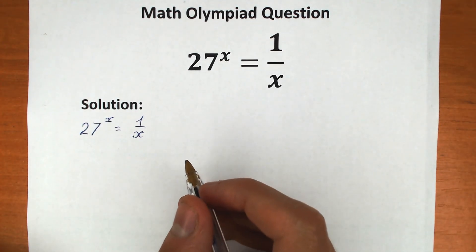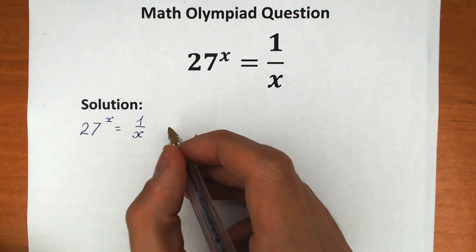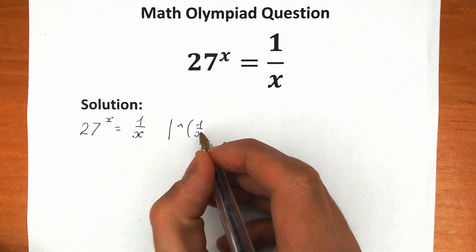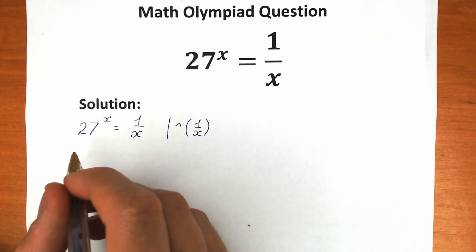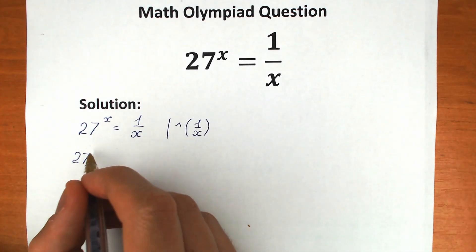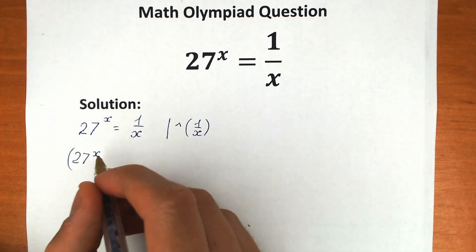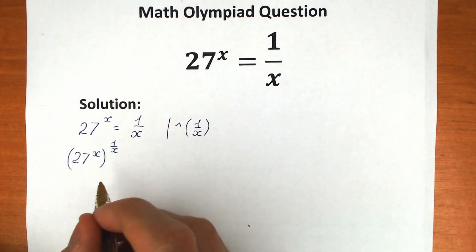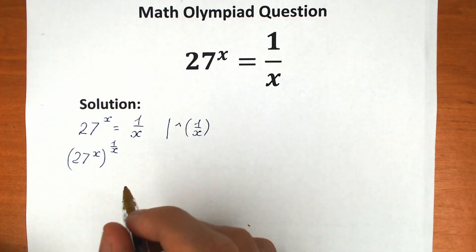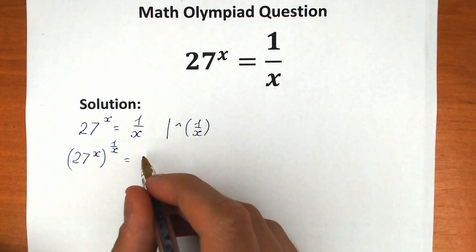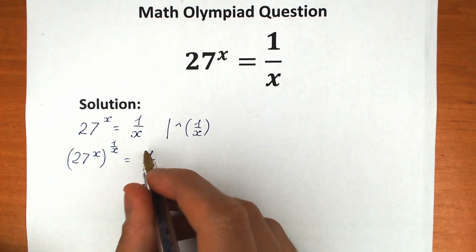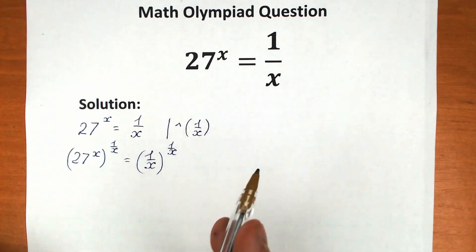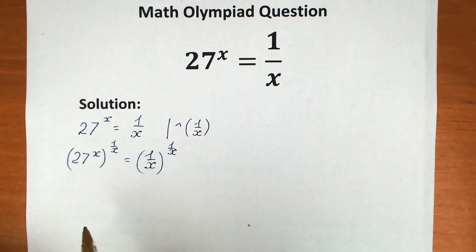First of all, let's raise both sides to the power 1 over x. So we're raising both sides to the power 1 over x. On the left hand side we have 27 to the power x, raised to the power 1 over x. And our right hand side equals 1 over x to the power 1 over x. We just raise both sides to the power 1 over x.